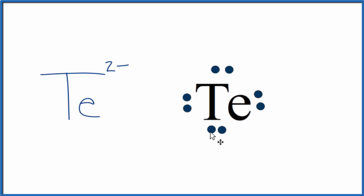And then because it's an ion, we do need to put brackets around it. Then we would put the 2- on the outside. So this would be the Lewis structure for Te 2-.